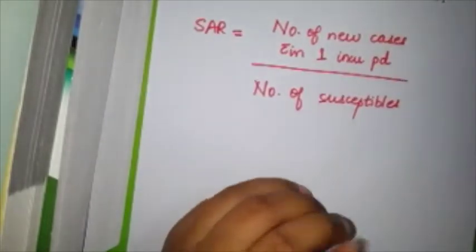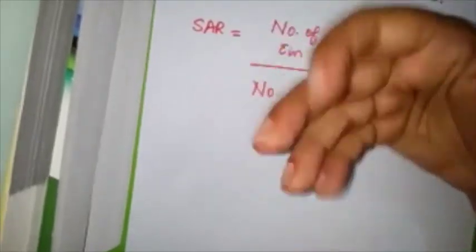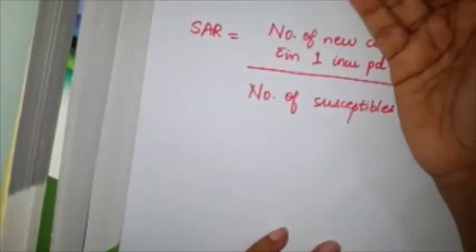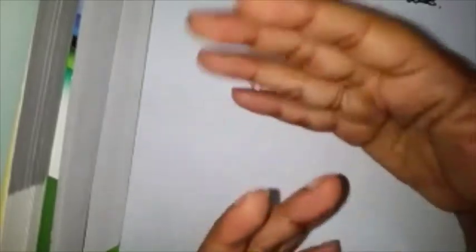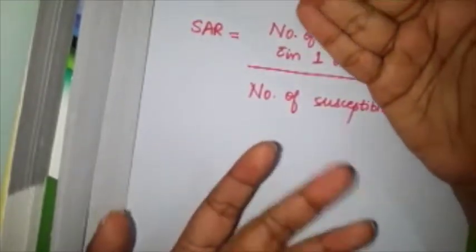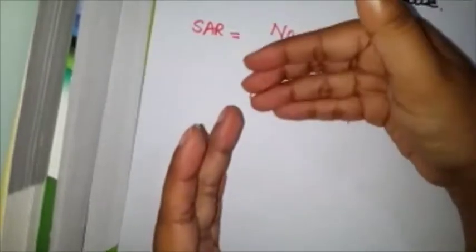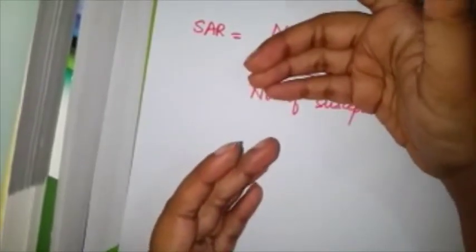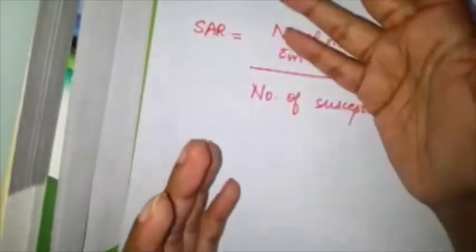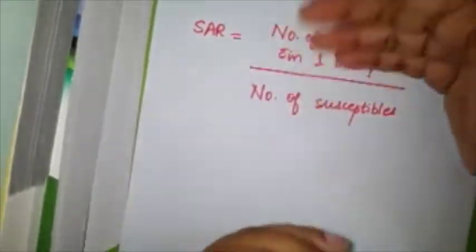How much this agent can spread fast in one incubation period is your secondary attack rate. Why do you have to know this? It's obviously relevant only for acute diseases or communicable diseases, and this is basically a measure of communicability.